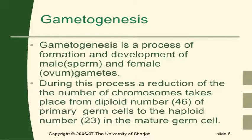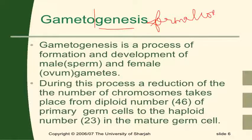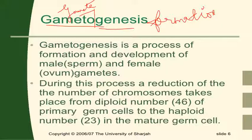So what is gametogenesis? Gametogenesis is the formation of the gamete. It is made of two words: gamete and genesis. Genesis means formation, and gamete refers to the gamete. So the formation of gametes — the male sperm cells and the female ovum — is collectively termed gametogenesis.